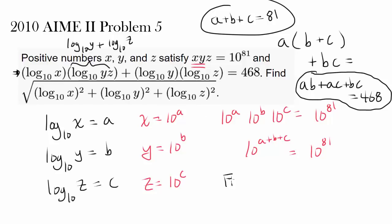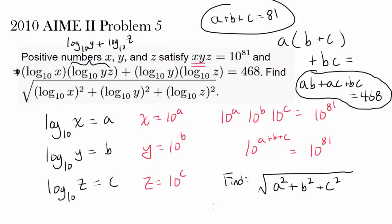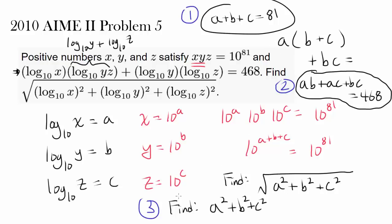So we know two things: a plus b plus c equals 81, and ab plus ac plus bc equals 468. We wish to find the square root of a squared plus b squared plus c squared. Really, we only have to find a squared plus b squared plus c squared first. Once we find this value, we simply take the square root and we're done. So we have these two constraints to work with to get a squared plus b squared plus c squared.